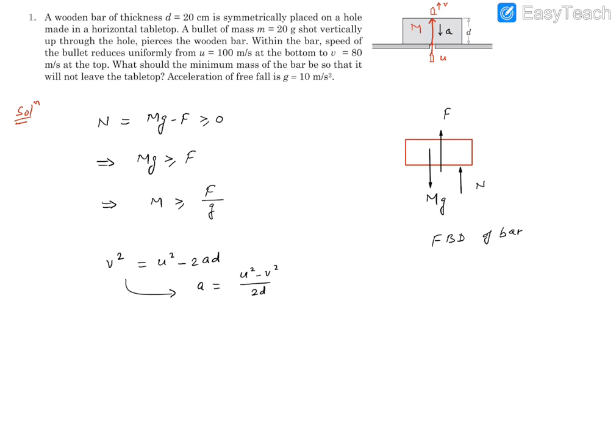If we multiply this by the mass of the bullet, that gives the force acting on the bullet: F = ma = m(u² - v²)/(2d). We need M ≥ F/g, so M ≥ m(u² - v²)/(2dg). This is the expression, our result.